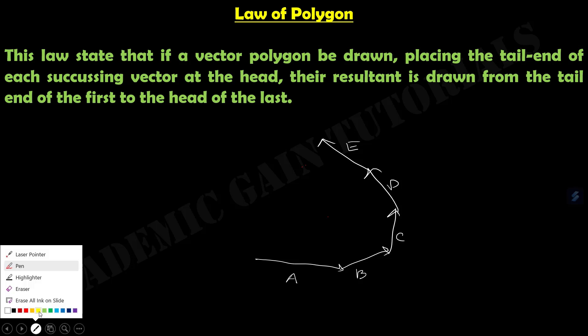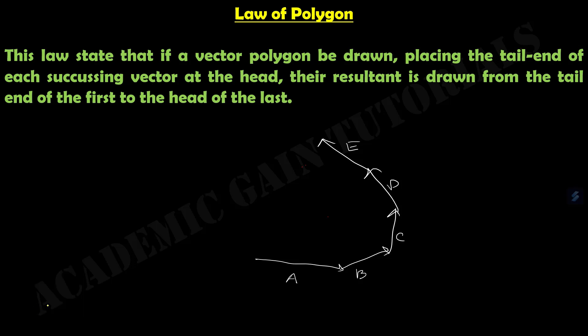We place the head of vector A at the tail end of vector B. Then the head of vector B at the tail end of vector C, the head of vector C at the tail end of vector D, and the head of vector D at the tail end of vector E, in that manner.